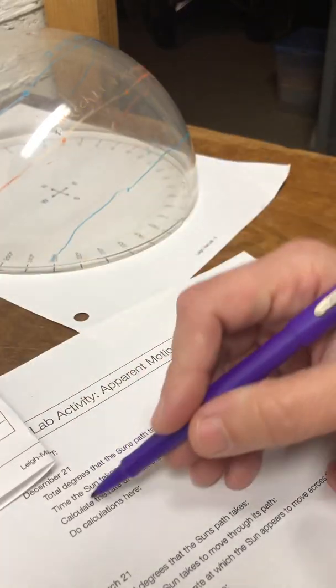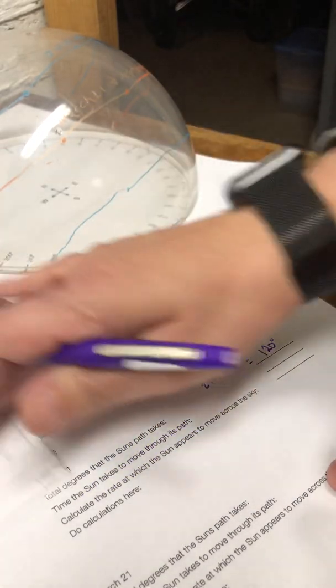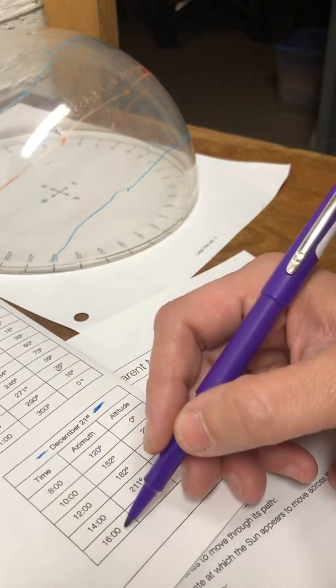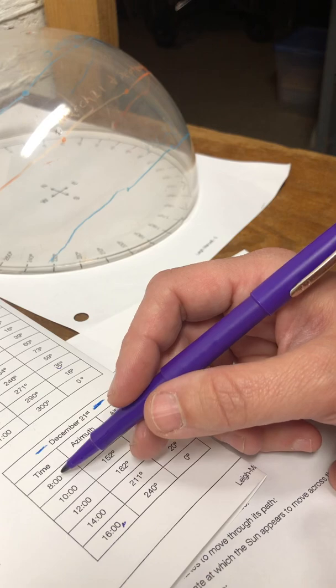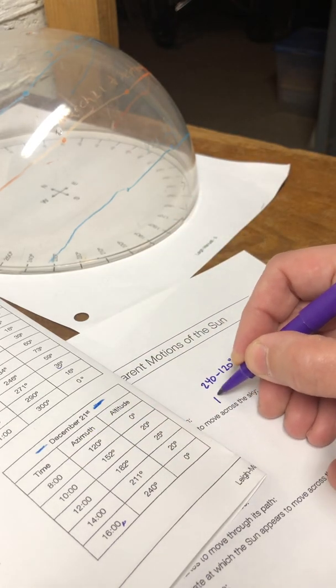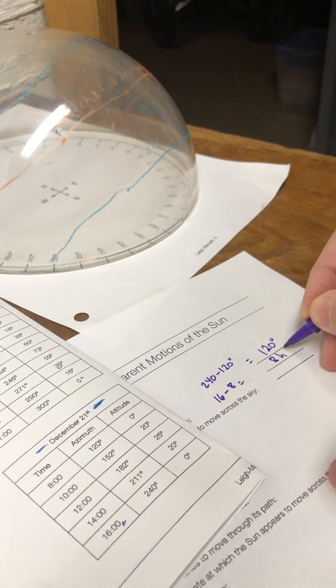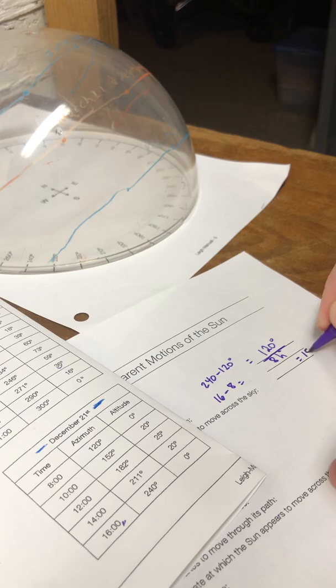The time the sun takes to move through its path, I take my top time, which is 1,600 hours, and I subtract it from 8. So 16 minus 8 gives me 8 hours. And when I divide those two, I get 15 degrees per hour.